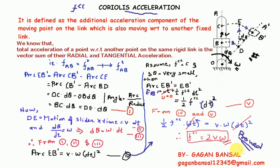This is the required expression for the Coriolis component of acceleration, calculated when the distance between two points in a mechanism is not fixed — as here, where point B is not fixed. Now, what are the directions of this Coriolis component? As stated, it is always perpendicular, but let us see when and how its direction changes.